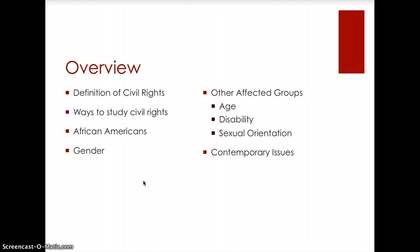We're going to look at the ways you can study civil rights — there are a lot of different ways to tackle this issue. The two major groups we're going to focus on are civil rights related to African Americans and civil rights related to the issue of gender. Then we'll lightly touch on other affected groups including discrimination based on age, disability, sexual orientation, being Latino, Native American, and Asian American. We'll close out by looking at some of the more contemporary issues related to this topic.